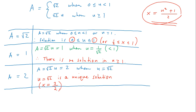Our final answers are as follows. For a equals the square root of 2, the solution is x greater than or equal to one-half but less than or equal to one. For a equals 1, there is no solution. For a equals 2, there is a unique solution which is x equals 3 halves.